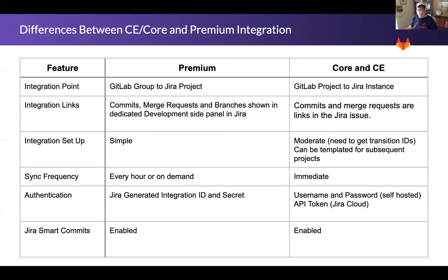The premium integration synchronizes the links hourly or on demand, whereas the basic integration creates the link immediately. The difference is that once a link is created in Jira with the basic integration, it is never automatically updated. There is also a difference in how user authentication is handled. Both integrations enable Jira smart commits that allow Jira issues to be transitioned or otherwise acted upon by keywords provided in the GitLab commit message.